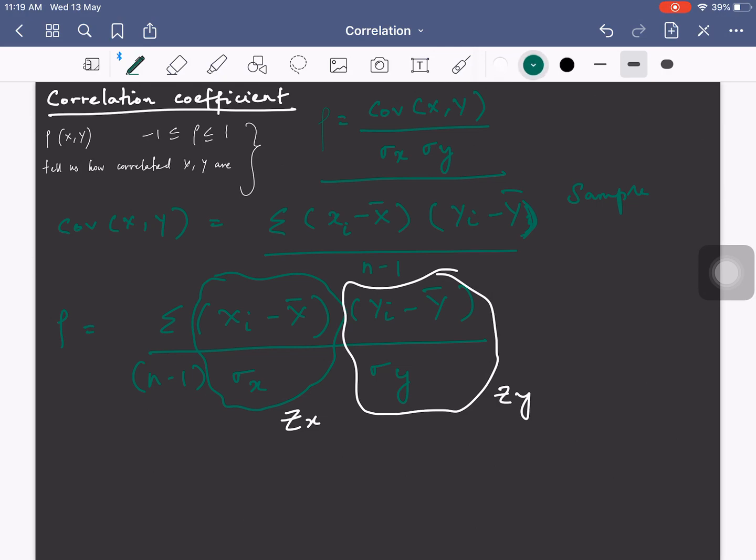We can basically rewrite this as rho is equal to sigma z x and z y by n minus 1. This is exactly what you saw in my previous video.